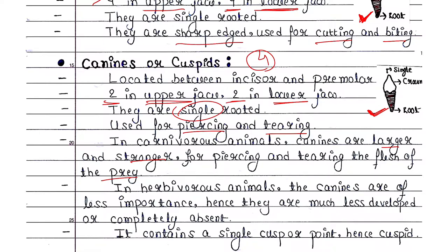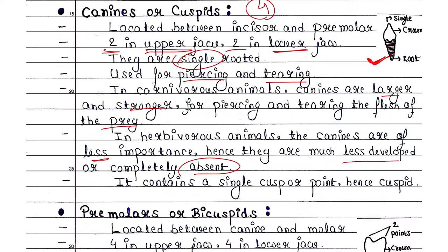Whereas in herbivorous animals, canines are of less importance — they are much less developed or completely absent, because herbivorous animals do not require canines since they don't consume flesh. In the crown of canine teeth, there is only one single point, and that point is also called a cusp. Hence they are known as cuspids.